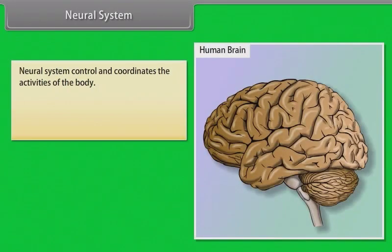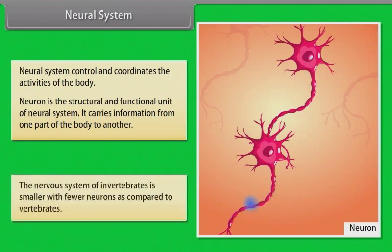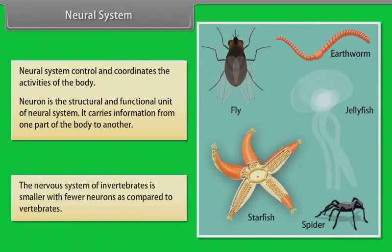The neural system controls and coordinates the activities of the body. Neuron is the structural and functional unit of the neural system. It carries information from one part of the body to another. The nervous system of invertebrates is smaller with fewer neurons as compared to vertebrates.